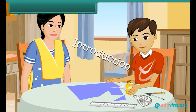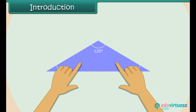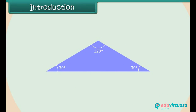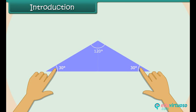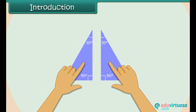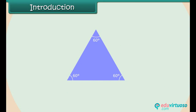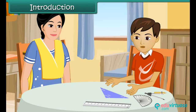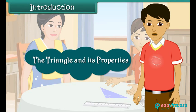Mom, look, I made a new triangle by joining two identical right-angled triangles! That's great, Nick. Did you observe the sides and angles of the new triangle? Yes, mom, two sides and two angles are equal. Wonderful! Now join two right-angled triangles to create a new triangle with all sides and all angles equal. I have done that as well, mom. In this lesson, you will learn about the triangle and its properties.